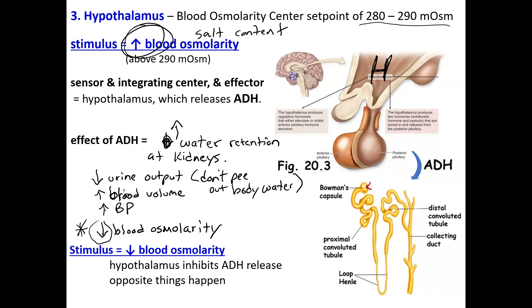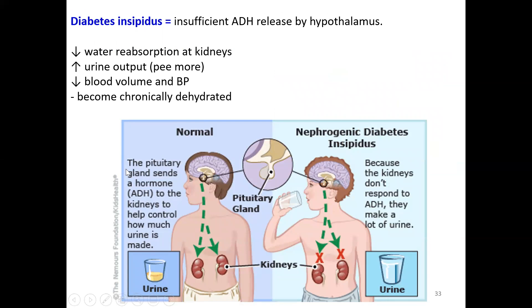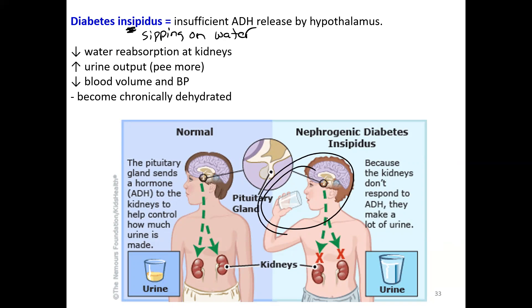There is a disorder where you don't secrete enough ADH, called diabetes insipidus. Without adequate ADH, you are not reabsorbing water at the kidneys, so you pee out more body water, and your blood volume and blood pressure drop. You become chronically dehydrated because you're not retaining body water — you're peeing it all out. Think of the term 'insipidus' — like always sipping on water because you're constantly dehydrated and thirsty. This is common enough that you may see it as future nurses.